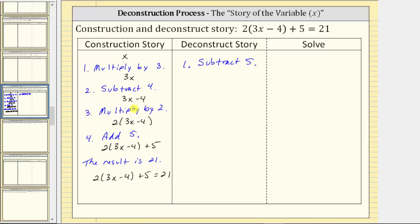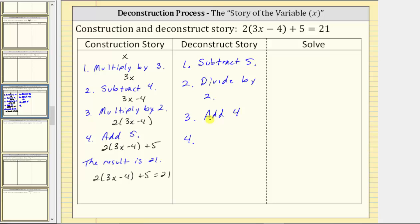Going back to the construction story, the third step is multiply by two, which means the second step of the deconstruct story must undo multiplying by two — therefore the second step is divide by two. Step three in the deconstruct story must undo step two of the construction story: to undo subtracting four, we add four. And finally, the last step is to undo the first step — to undo multiplying by three, we divide by three.